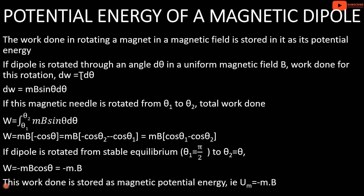Next, we discuss the potential energy of the magnetic dipole. The work done in rotating a magnet in a magnetic field is stored in it as its potential energy. In a uniform magnetic field, a dipole will rotate. If the dipole is rotated through an angle dθ in a uniform magnetic field B, the work done for this rotation is dW equals τ·dθ.